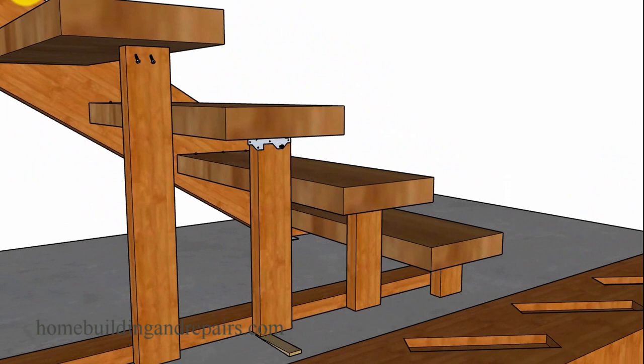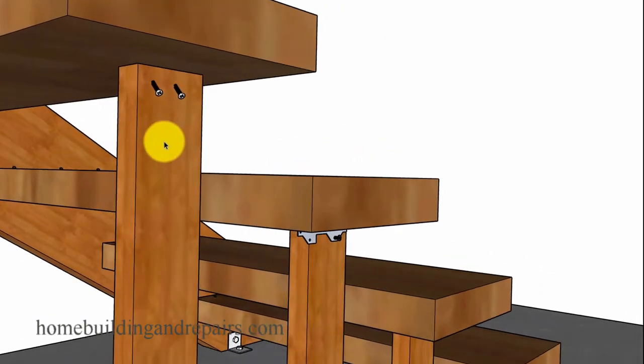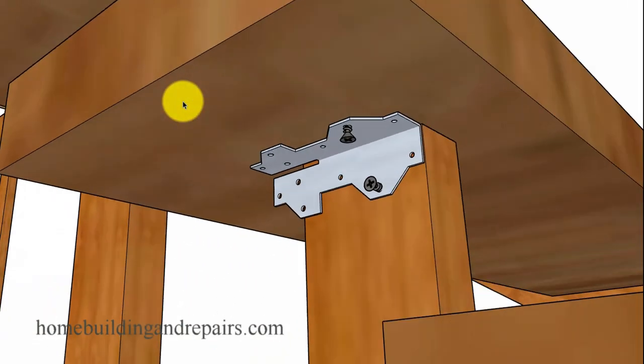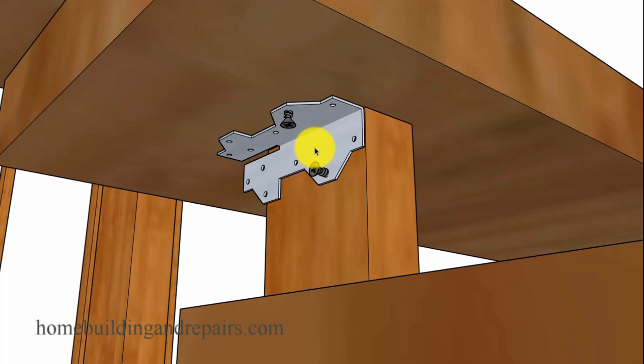Now I would like to point out that the support studs should be securely fastened to the treads to prevent them from falling down. You could use screws or building hardware. Just make sure you don't put it on the side that I have it on here. It should be on the other side. I just put this on to make a point.